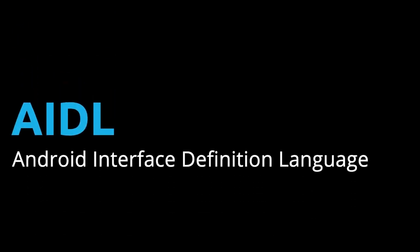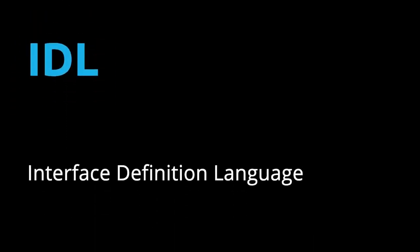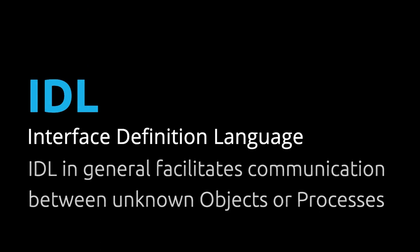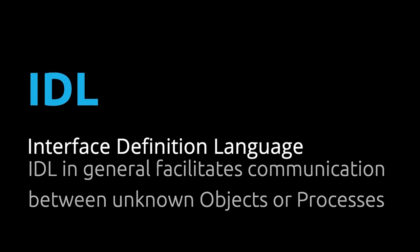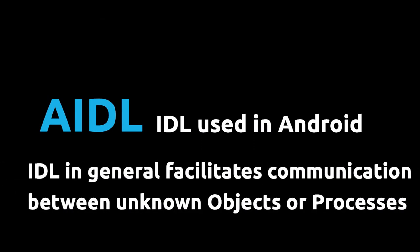AIDL stands for Android Interface Definition Language. To understand AIDL, we need to know first what an IDL or Interface Definition Language is. IDL is a language that lets a program or an object written in one language communicate with another program written in an unknown language. So AIDL is basically an IDL used by Android.